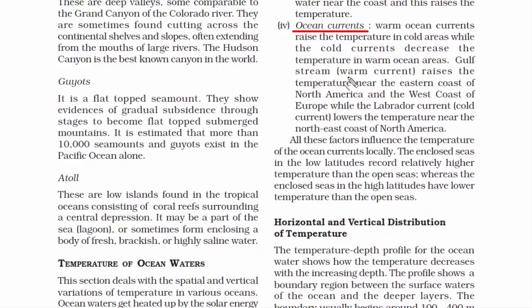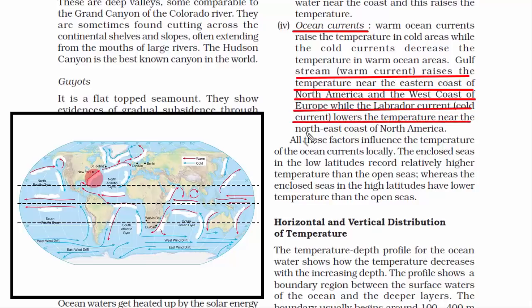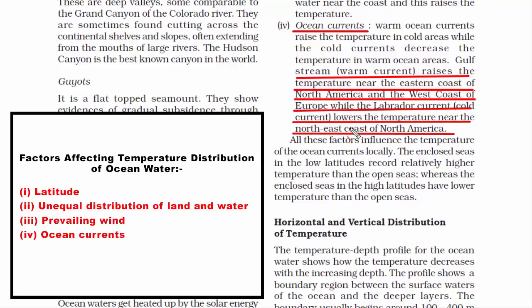For example, the Gulf Stream raises the temperature near the eastern coast of North America and the west coast of Europe, while the Labrador Current lowers the temperature near the northeast coast of North America. So these were the four factors that influence the temperature of ocean water.